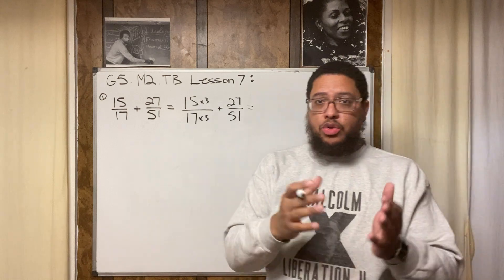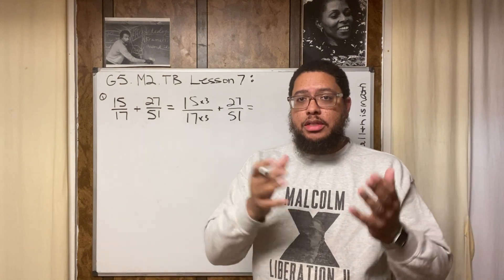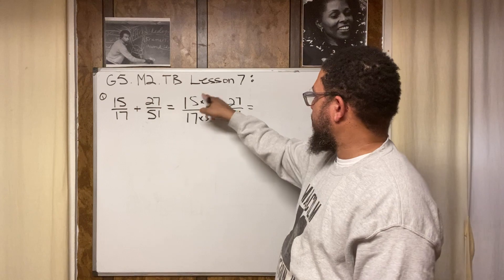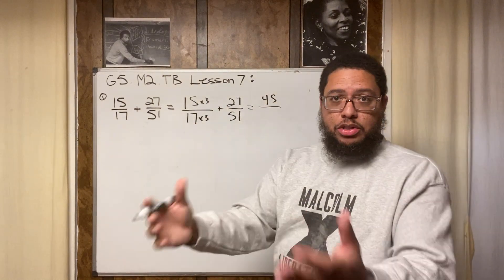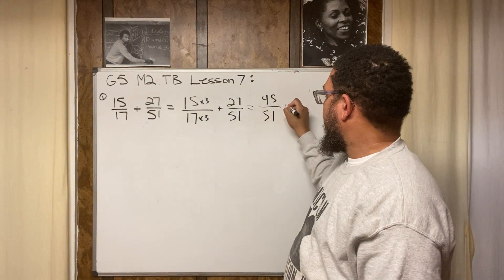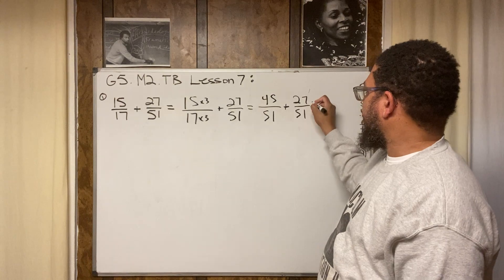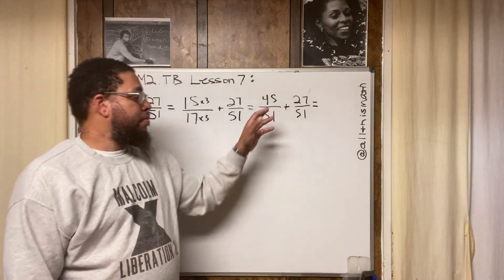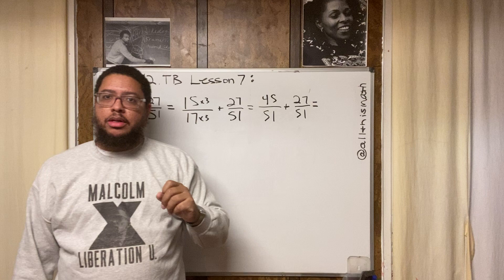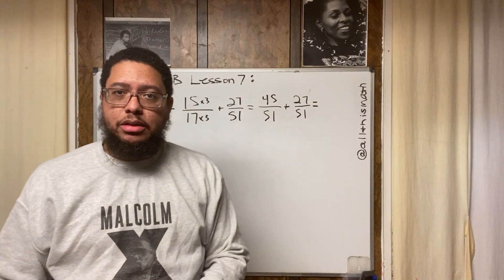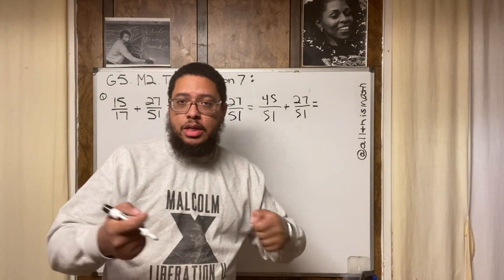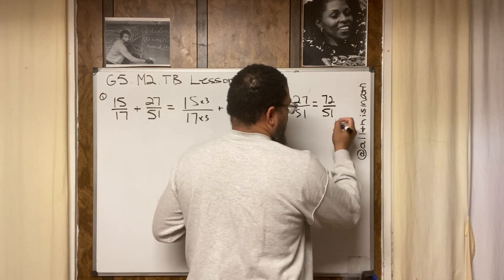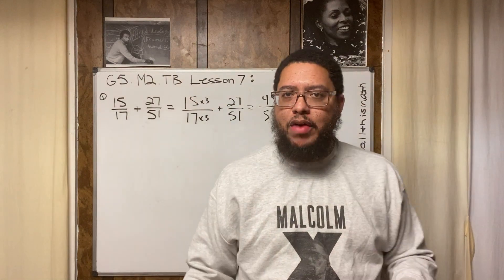What's 15 times 3? That's 45. You can break it down: 10 times 3 is 30, 5 times 3 is 15, and 30 plus 15 is 45. So that becomes 45 over 51. Now we add 45 and 27: break it into tens and ones — 40 plus 20 is 60, 5 plus 7 is 12, and 60 plus 12 is 72. So we get 72 over 51, which is an improper fraction.